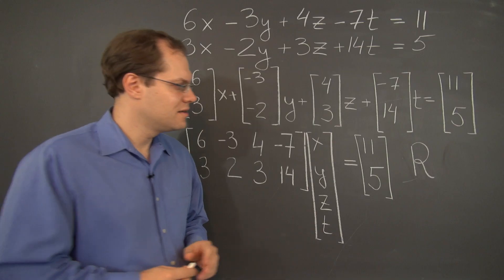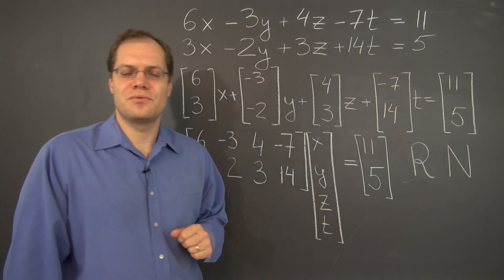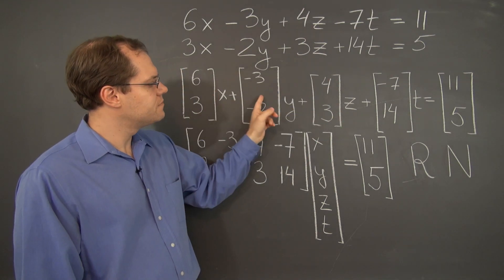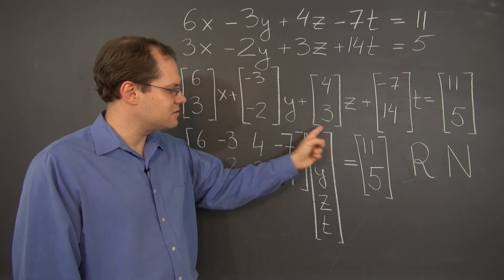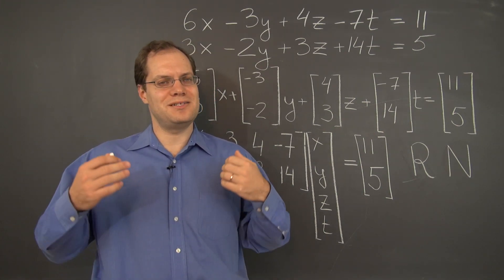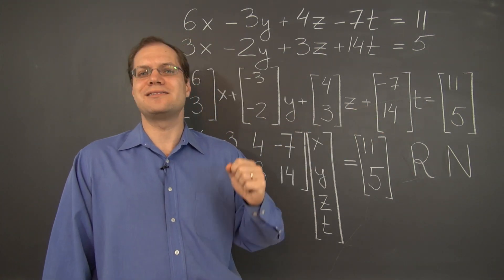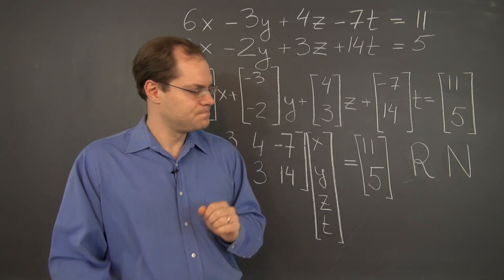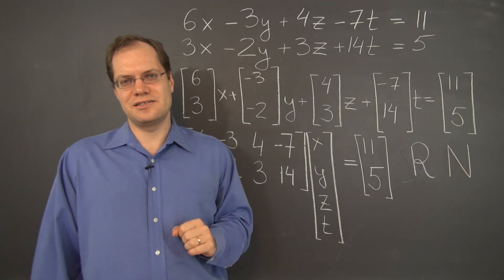The next term is the null space, denoted by the letter N. You're already familiar with this concept. The null space is a subspace of R^n — in this case R^4 — that corresponds to the linear combinations of these vectors that yield the zero vector. In the context of linear systems, the null space means the exact same thing with respect to these four vectors. The column space and the null space are the bread and butter of linear systems.